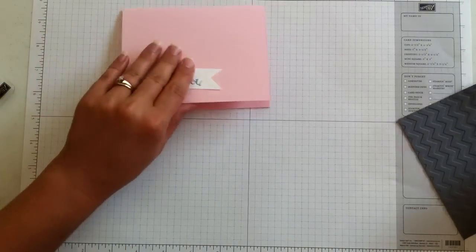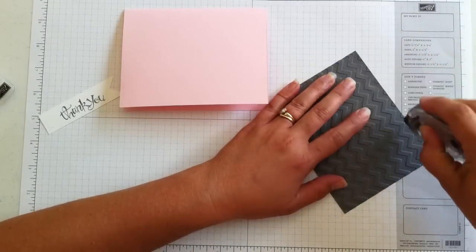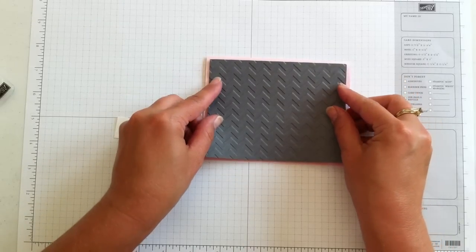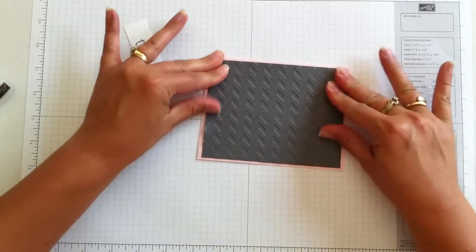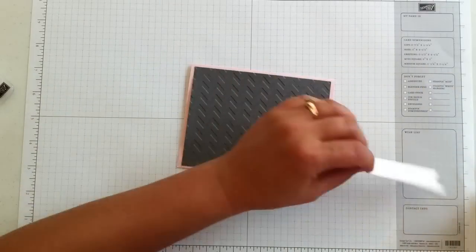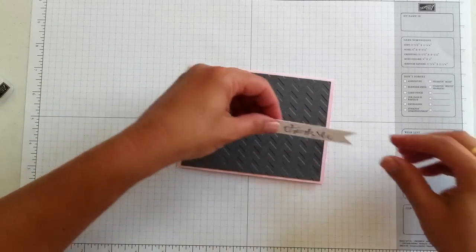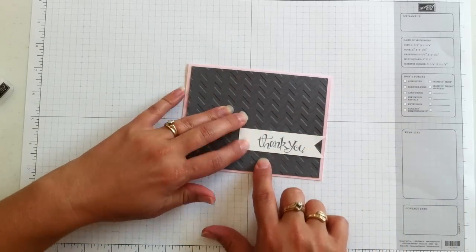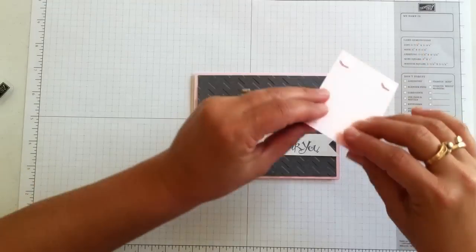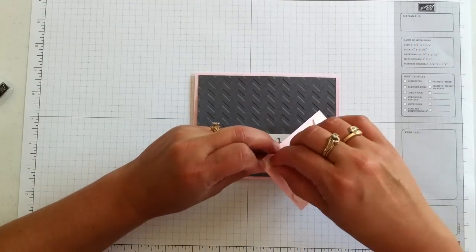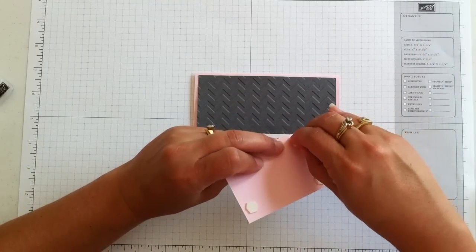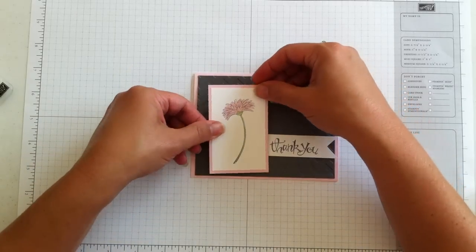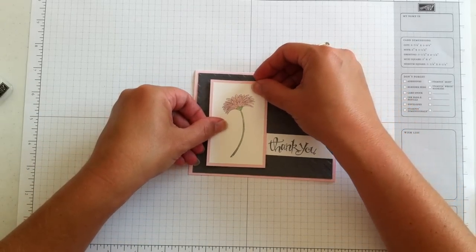And now we just need to do some layering. So put some snail on the back of this piece and layer that right onto the pink pirouette card. And then this piece, I'm going to use my snail adhesive. And I'm just going to tuck it down here. It's about an inch up on the gray. And then peel off the back of the dimensionals that I placed on this layer earlier. And I'll just set that right over this part here.